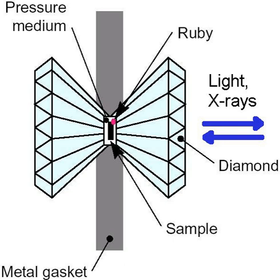A large variety of heater designs are available including those that heat the entire diamond anvil cell body and those that fit inside the body to heat the sample chamber. Temperatures below 700 degrees Celsius can be reached in air due to the oxidation of diamond above this temperature. With an argon atmosphere, higher temperatures up to 1700 degrees Celsius can be reached without damaging the diamonds. Resistive heaters have not achieved temperatures above 1000 degrees Celsius.